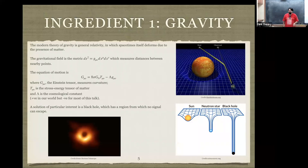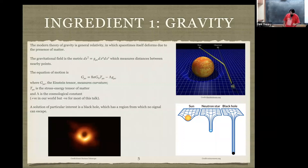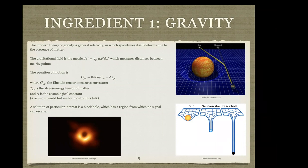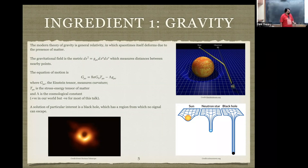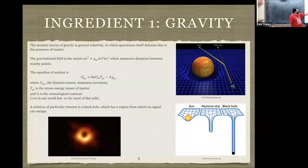The first ingredient is gravity. The modern theory of gravity is general relativity, where space-time itself deforms in the presence of matter. A good picture for this is the rubber sheet picture — you have a rubber sheet representing space, put a planet on it, and it deforms. The straight lines on the deformed rubber sheet are the geodesics. More mathematically, the basic variable is the metric ds squared, which is the square of the distance between nearby points — it's a matrix g_mu_nu times dx^mu dx^nu where mu goes from 0 to 3.